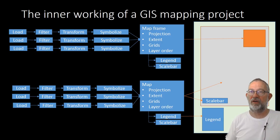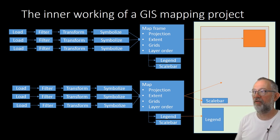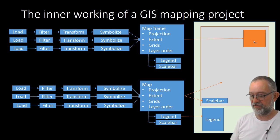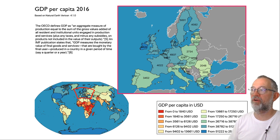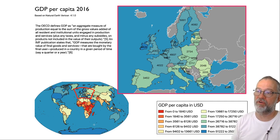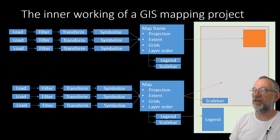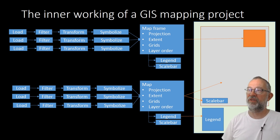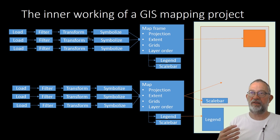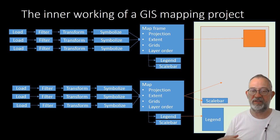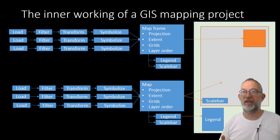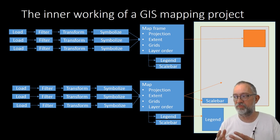If we look at the steps, our output is our final map where we have a data frame — here we've zoomed in on Europe — and another data frame with the whole world, and a legend. So that's a data frame for Europe, and we have to have some different layers to produce that data frame. We might need to make some filters, so delete or remove some data from the layers. We might need to do some transformations.